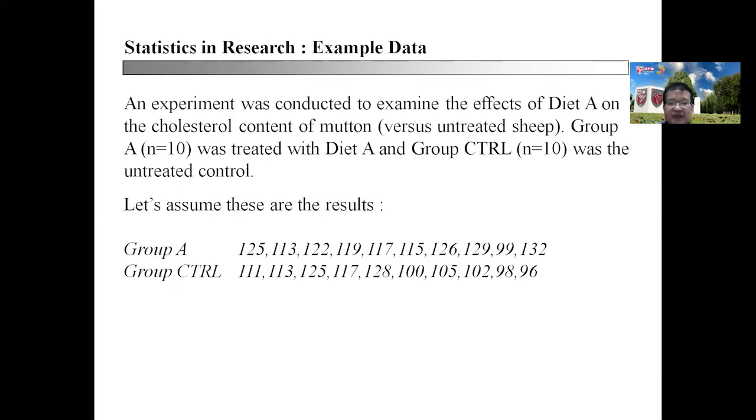Let's look at this particular example. This is an experiment conducted to examine the effects of diet A on the cholesterol content of mutton versus untreated sheep. Group A comprised of 10 sheep treated with diet A, and 10 more control animals were treated with the control diet. Let's assume these are the results from these 20 animals.